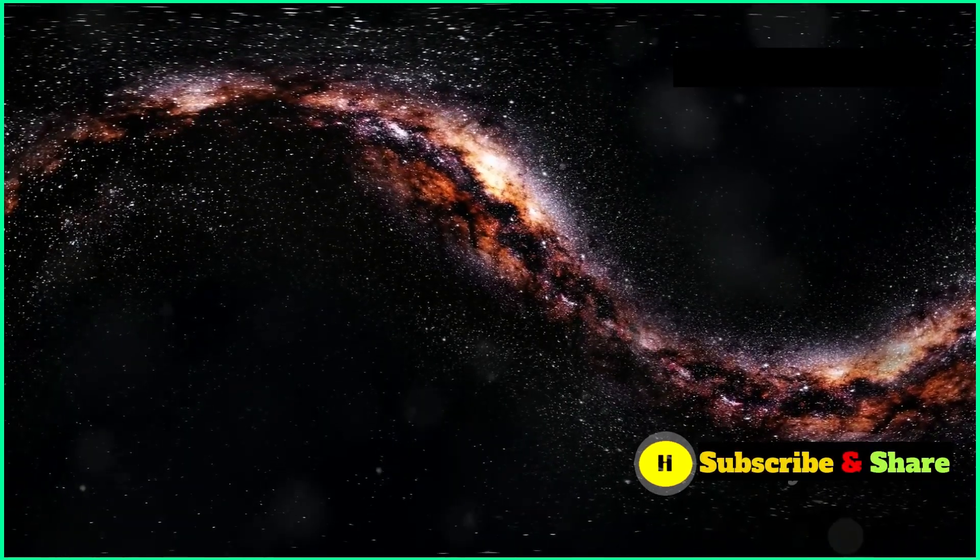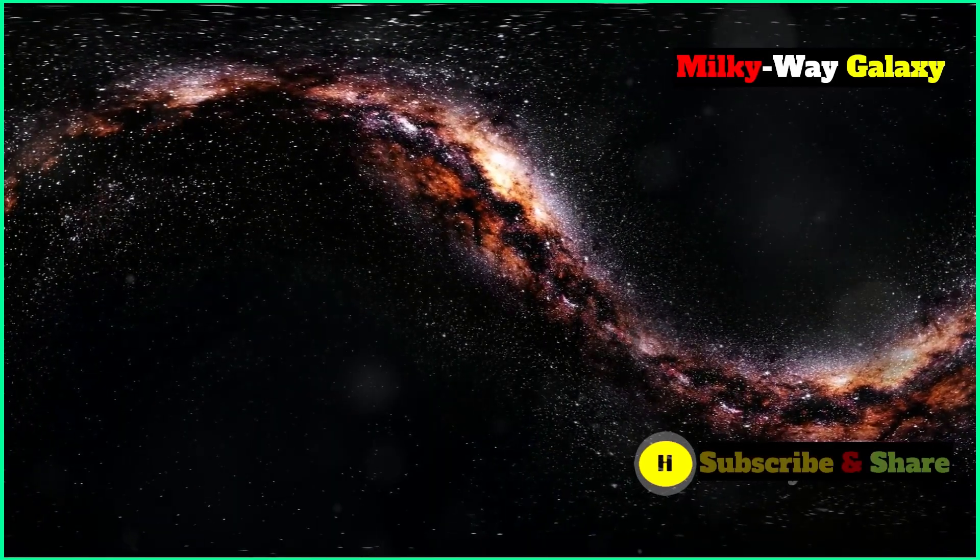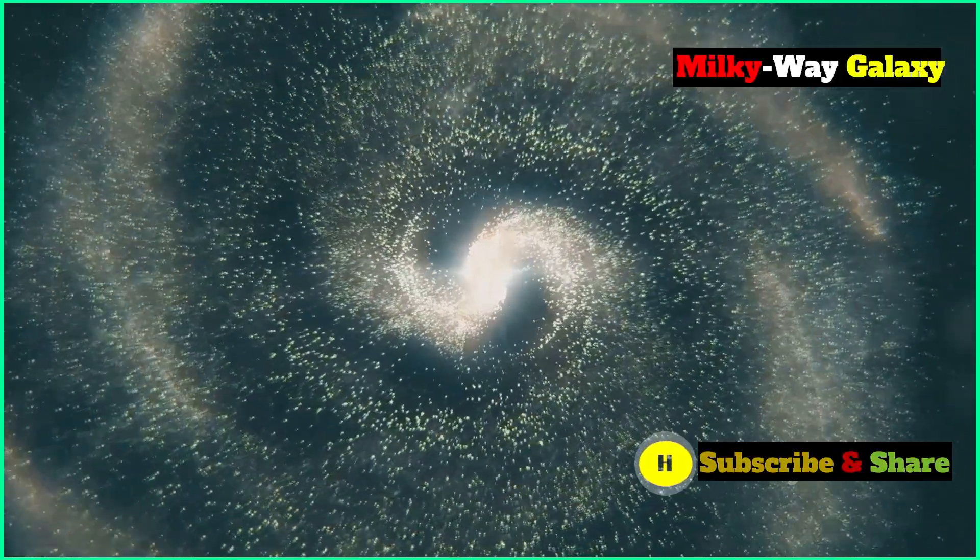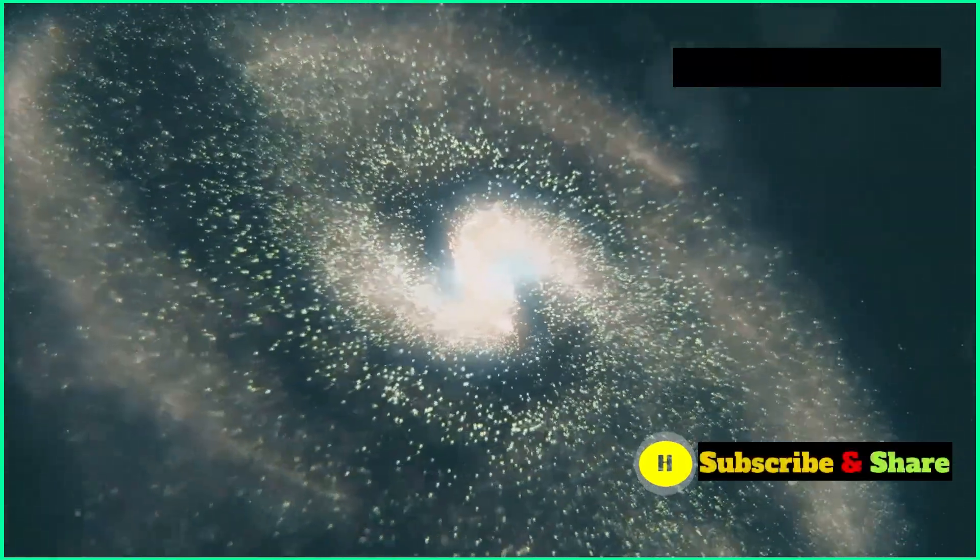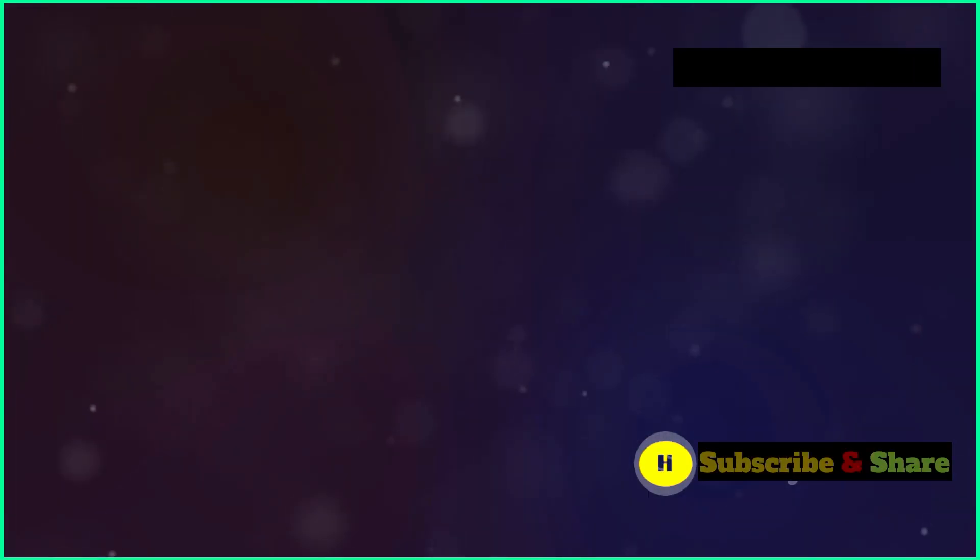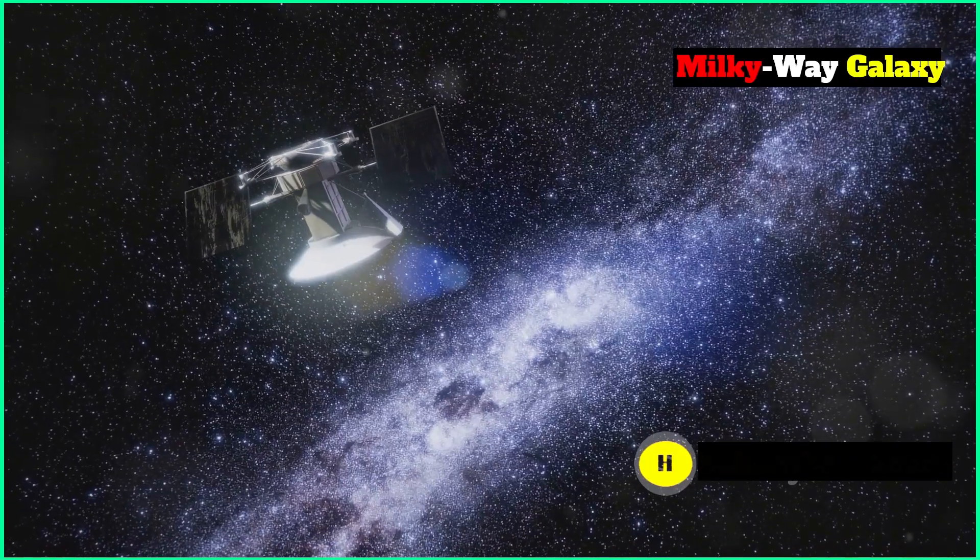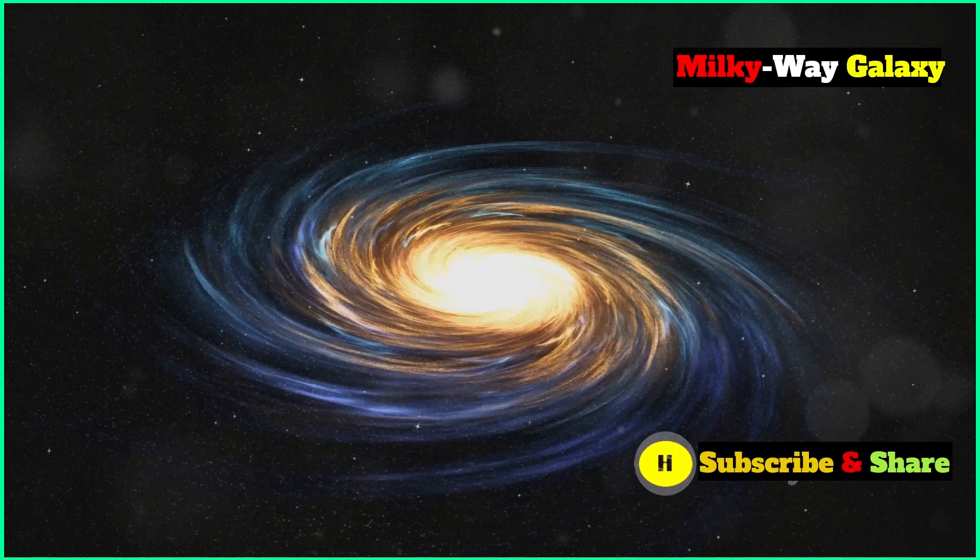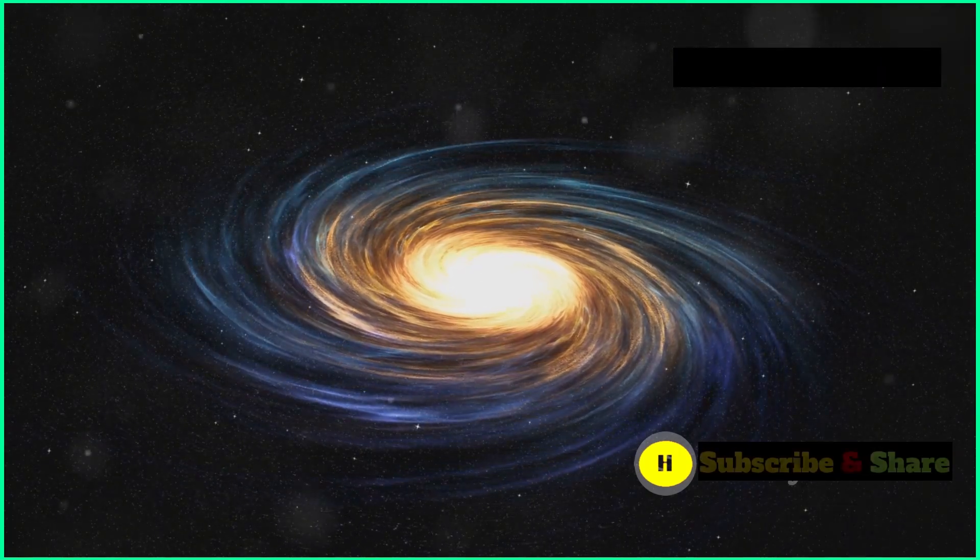These two galaxies are locked in a gravitational hug, and things are getting cozy. Now the universe is like a fruitcake in the oven, always expanding, pushing galaxies apart. But gravity, it's a bit of a rebel. It can put the brakes on that expansion, at least in the local area. And the Milky Way and Andromeda, they're close enough to be caught in the act.